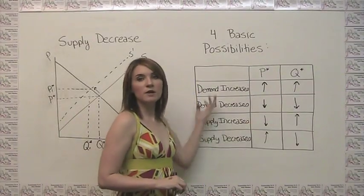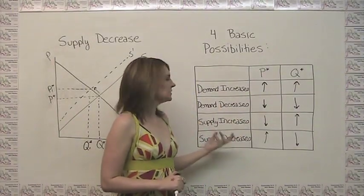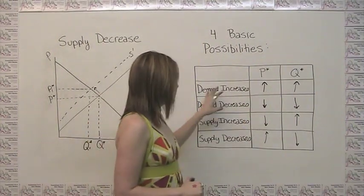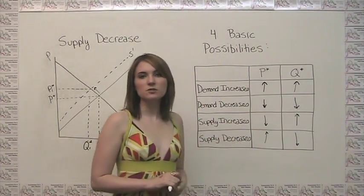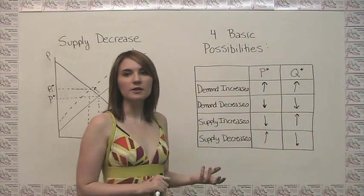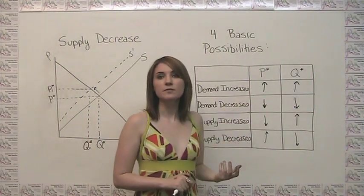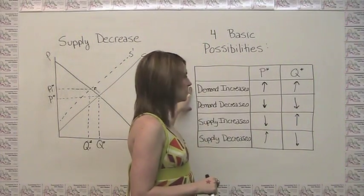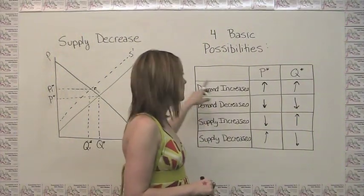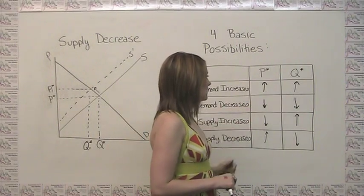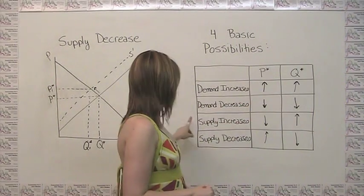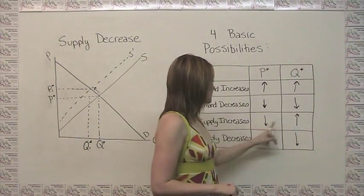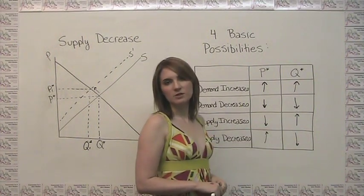Now, while you do have a nice summary here, it's not really necessary to memorize this table. Because whenever you have one of these situations, you can always just quickly draw a little diagram to show you how the price and quantity move. That said, it is helpful to remember that when you have an increase or decrease in demand, the price and quantity move in the same direction. And when you have an increase or decrease in supply, the price and quantity move in opposite directions.